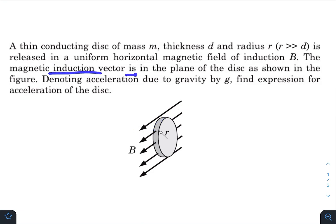The magnetic induction vector is in the plane of the disk as shown in the figure. Denoting acceleration due to gravity by g, find expression for acceleration of the disk.